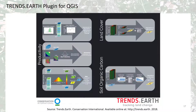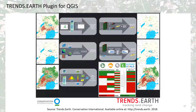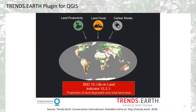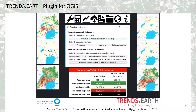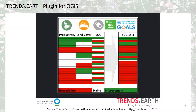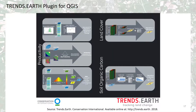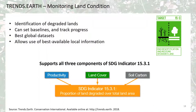Trend Earth can be used to plot time series of key spatially explicit indicators of land change, including land degradation and land improvement, and to produce maps and other graphics that can support monitoring and project implementation to address land degradation. The tool can also potentially be used to overlay other relevant spatially explicit indicators. Trend Earth allows users to monitor land conditions, including identification of degraded lands, set baselines and track progress over land degradation or improvement, use best global datasets, and allows use of best available local information. It can also be used to compute land cover changes, to evaluate changes in soil carbon, land productivity, or vegetation productivity.